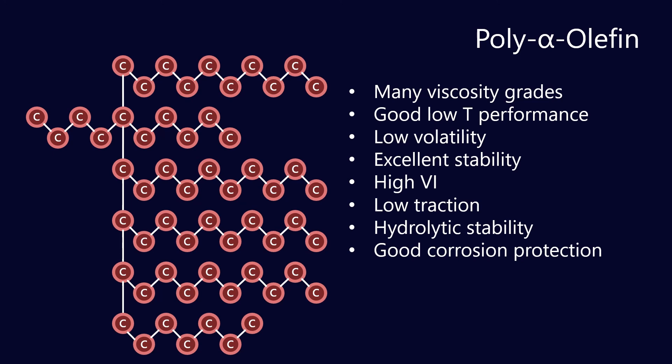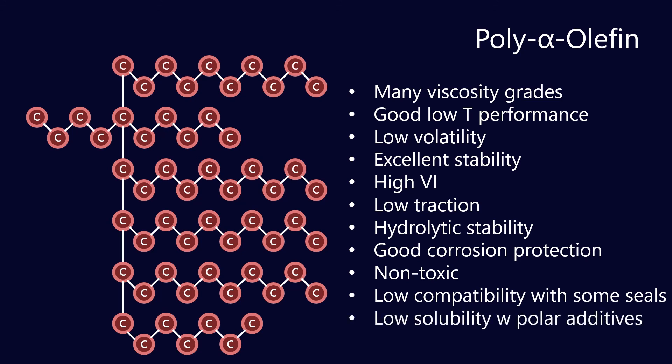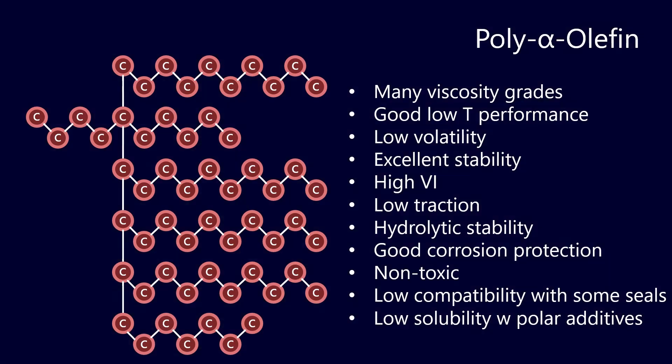It also has good corrosion protection and that's partially down to the fact that it doesn't take on water. Water obviously raises the corrosive potential by allowing dissociation of acidic compounds. It's also non-toxic because of a lack of aromatic rings. But unfortunately the downsides are we can sometimes have low compatibility with some seal products and it also has low solubility with polar additives - these are the metal reactive ones like metal deactivators, anti-wear additives, EP additives. Anything that really needs to adhere to a metal surface has very low solubility in a PAO and that's often why a PAO will need an ester or an alkylated naphthalene co-base in order to solvate those additives.